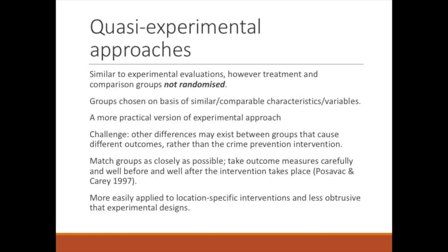Quasi-experimental approaches are similar to experimental evaluations except that treatment and comparison groups are not randomised — they are chosen on the basis of having similar or comparable characteristics, making them naturally occurring groups. This is more practical, but the main challenge is that unknown differences between groups may explain different outcomes rather than the intervention itself. The approach involves matching groups as closely as possible and taking outcome measures well before and well after the intervention. It is more easily applied to location-specific interventions and is less obtrusive than experimental designs.